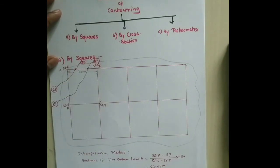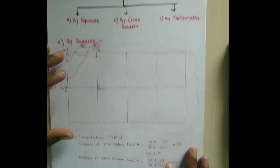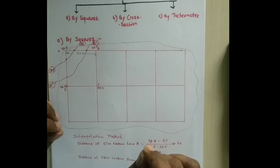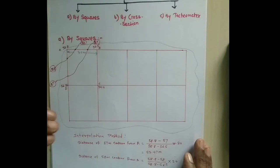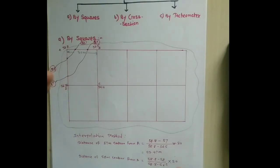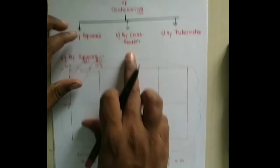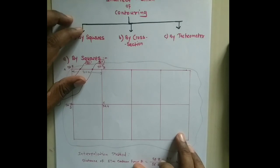So this is all about the by-squares method of indirect contouring. In the next video, we will look at the by cross-sectioning method. Take care, thank you.